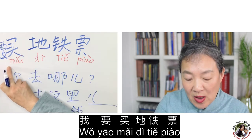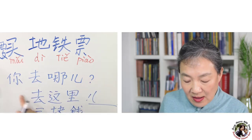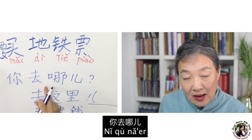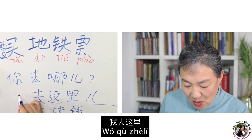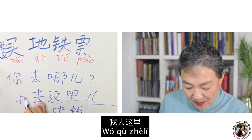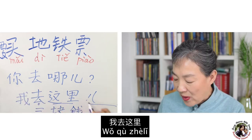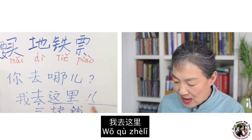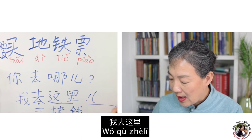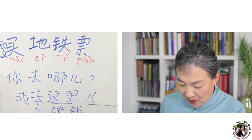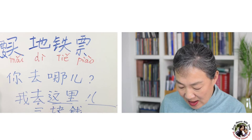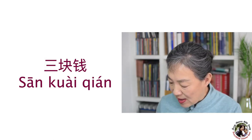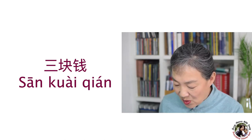When you say 我要买地铁票, the person may ask you 你去哪儿? You tell them your destination — 我去这里, or the name of the place, like 和平宾馆. They may then tell you the price, for example 三块钱 — 3 yuan.